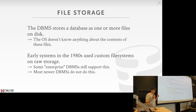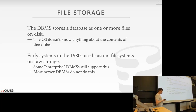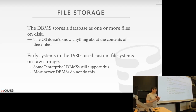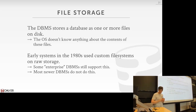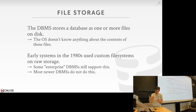At the end of the day, the database is just a bunch of files on disk. Some systems store the database as one file — SQLite does this. Most others store it across multiple files, because databases can be very large (petabytes) and you don't want to hit the file system's file size limit. The OS doesn't know anything about what's in these files — they're just binary data. The format for database files is typically proprietary to the specific database system.